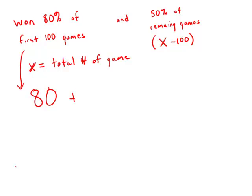In those remaining games, they won 50% of the games. So that is 0.5 times x minus 100. And the total number of games that they've won has to equal 70% of x.